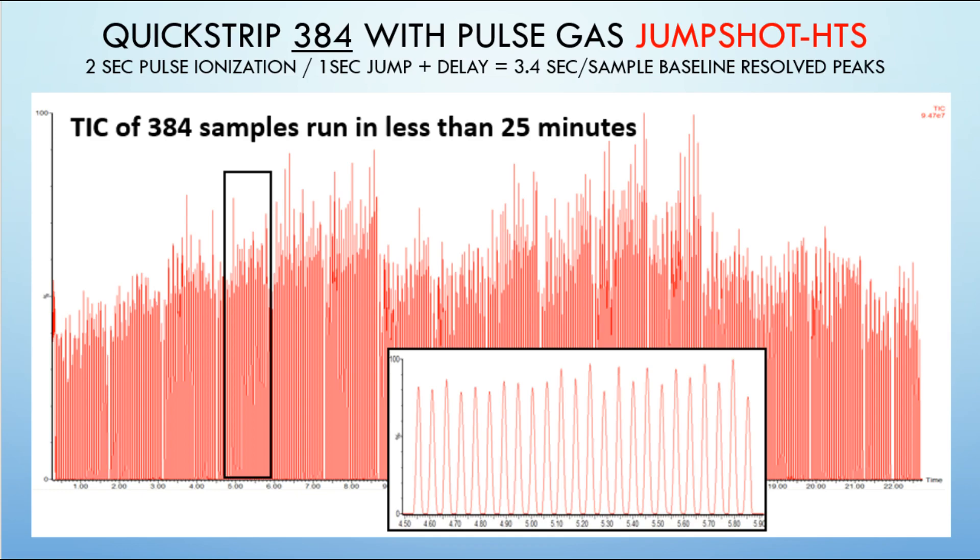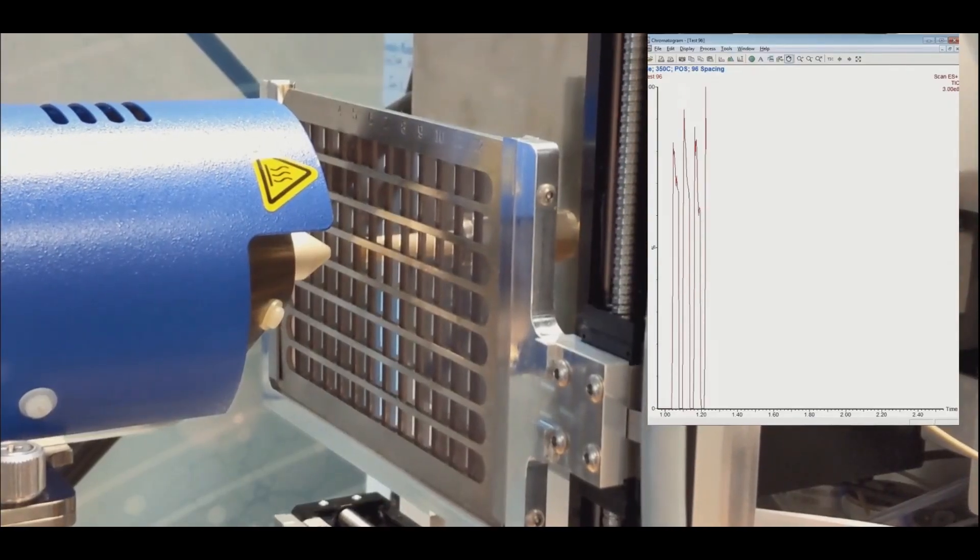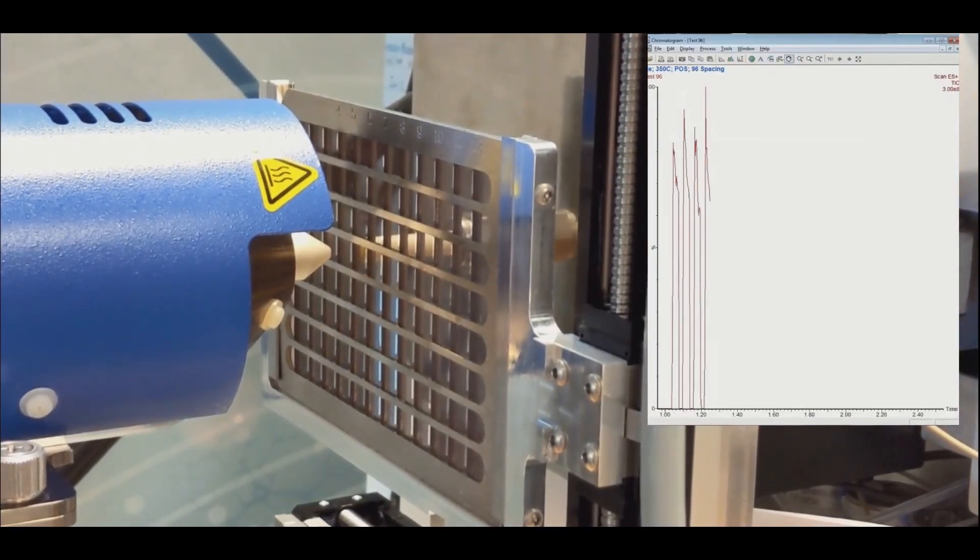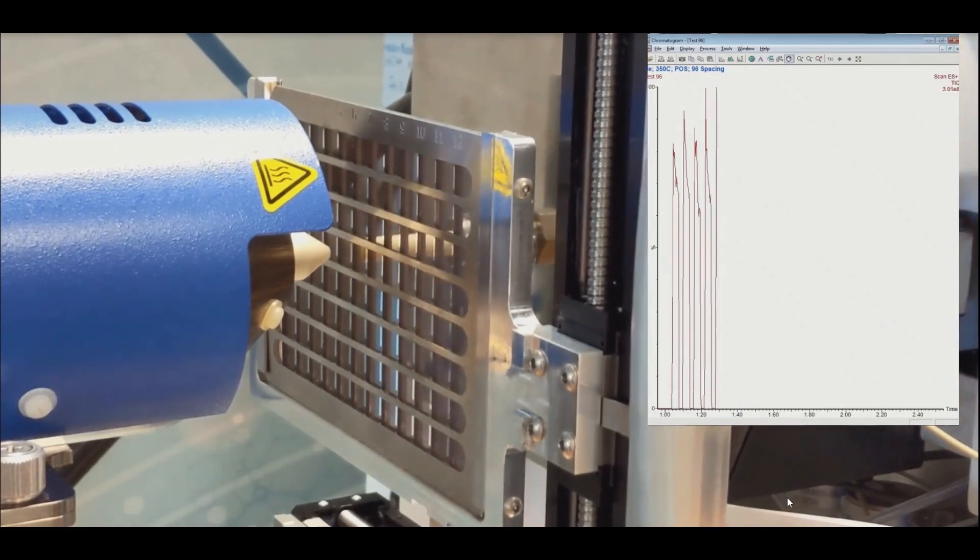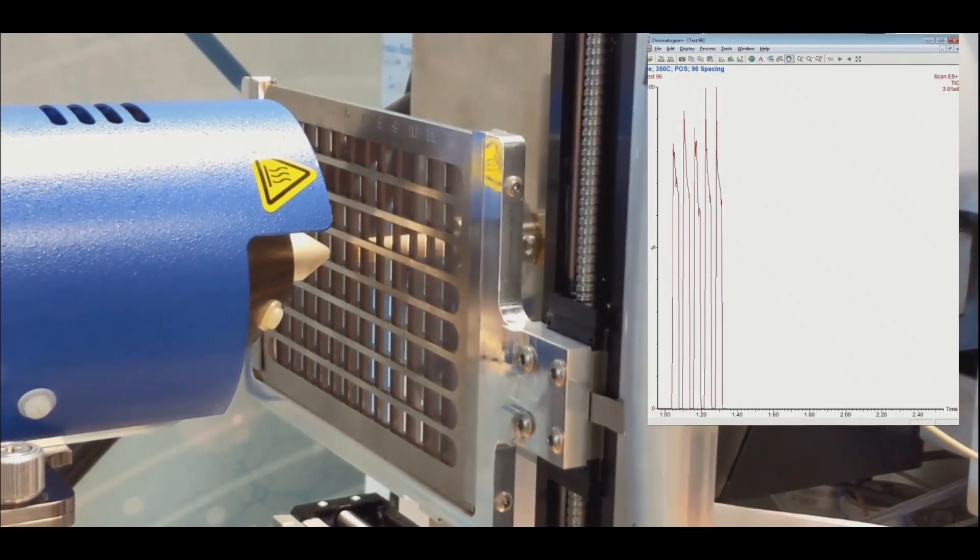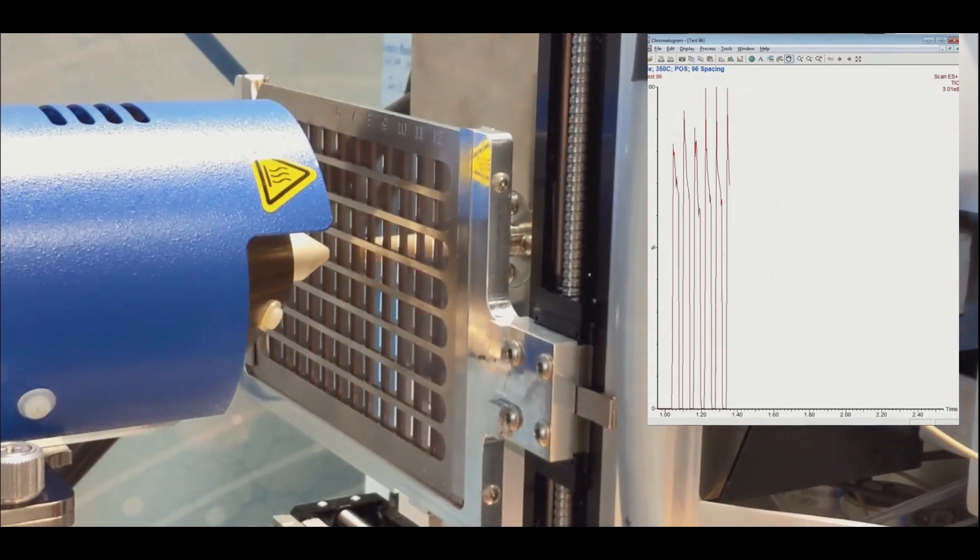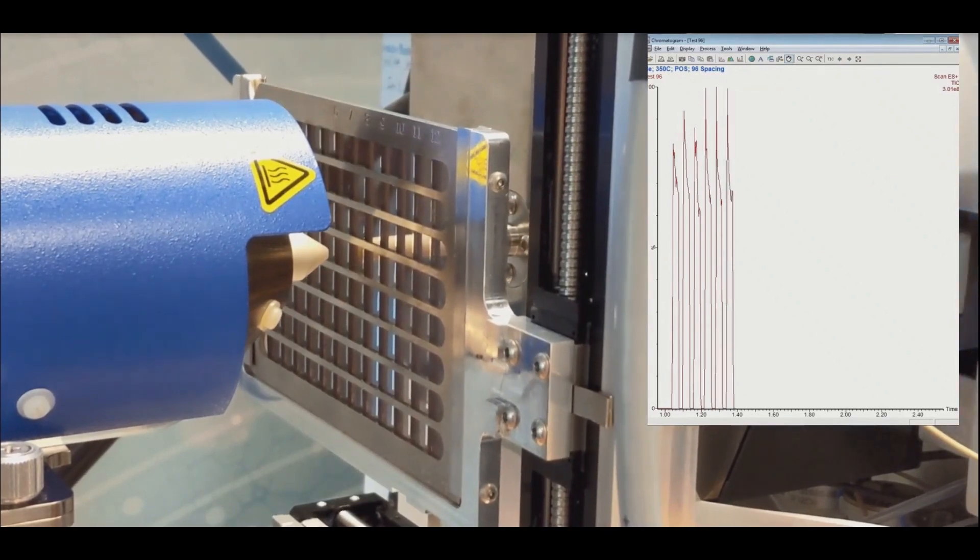Pulsed gas has also almost completely eliminated ambient background ions between samples while simultaneously improving target analyte ionization. Peak shape is improved as well, with sharper defined peaks that always return to baseline to facilitate post-analysis processing.